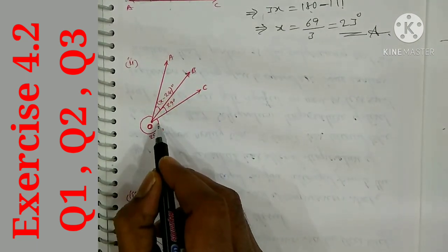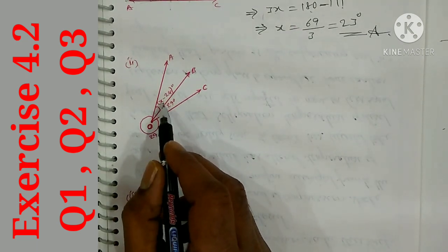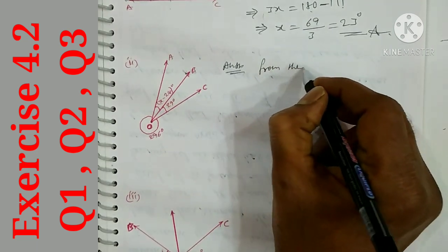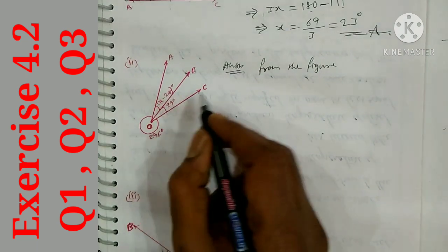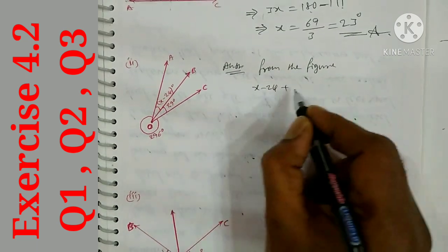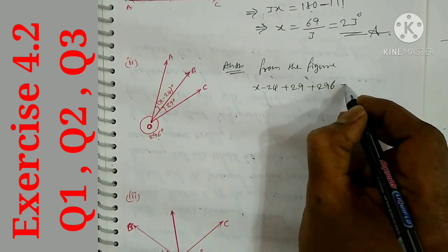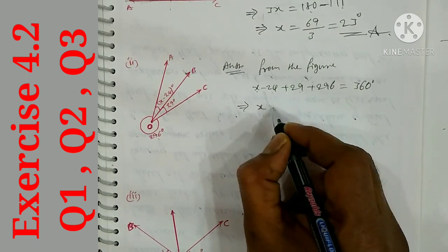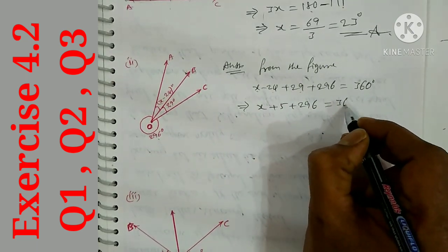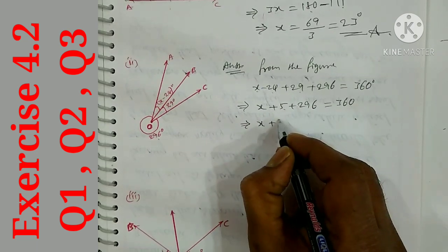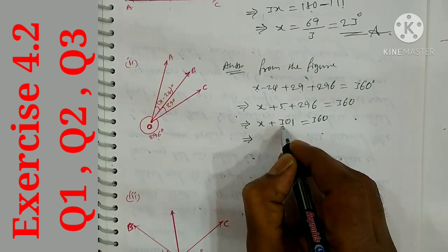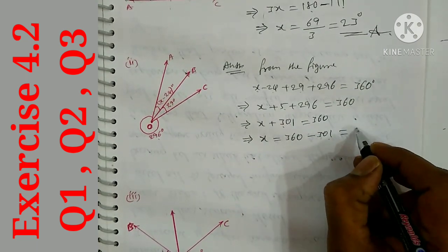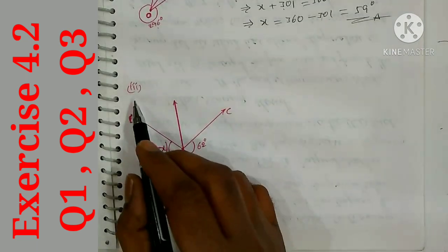Part (b): Here the complete angle is 360 degrees and there are 3 angles. From the figure: (x - 24) + 29 + 296 = 360 degrees. Simplifying: x + 5 + 296 = 360, so x + 301 = 360, therefore x = 360 - 301 = 59 degrees.